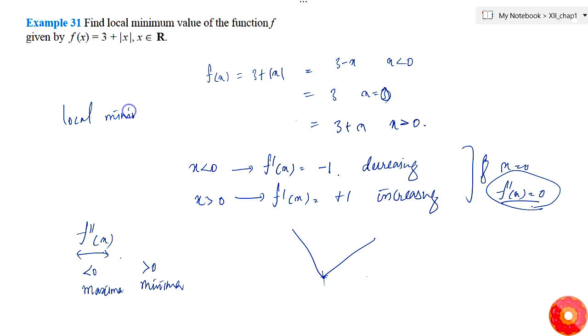The local minimum value of the function is f(0) = 3. This is the local minimum.